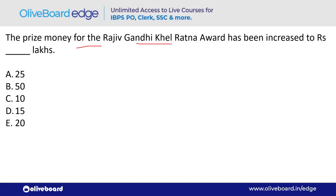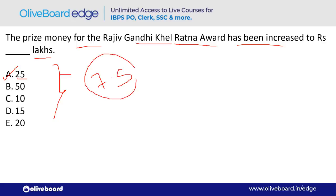The prize money for the Rajiv Gandhi Khel Ratna Award has been increased to how many lakhs? It has been increased to ₹25 lakhs — previously it was ₹7.5 lakhs. The Rajiv Gandhi Khel Ratna Award is the highest sports honor.